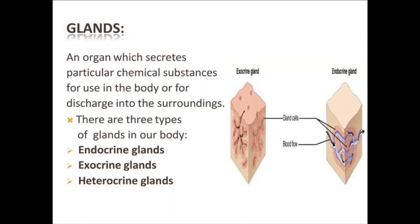Good morning students, today we will discuss about the endocrine glands. First of all, we have to know what is a gland. A gland is an organ which secretes particular chemical substances for use in the body or for discharge into the surroundings. There are three types of glands in our body: first, endocrine glands; second, exocrine glands; and third, heterocrine glands.